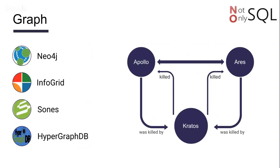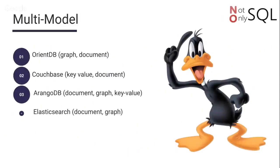What's the difference between graph and SQL technology? It's because I add direction here. For example, I can say Kratos killed Apollo, and I can also say Apollo was killed by Kratos — so I have direction to my relationships. The last type is multi-model: basically a multi-model database is when one NoSQL implementation implements more than one type. For example, ArangoDB implements two different types — graph and document — so that's a multi-model.